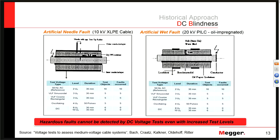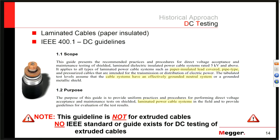Finally, there is no IEEE standard for DC testing on extruded cables. IEEE 400.1 exists, which is DC guidelines for testing on laminated power cable systems — and they go out of their way to specify PILC, paper insulated, lead covered, pipe type, or laminated cable systems. So at the moment, no IEEE standard exists for DC testing on extruded cables.